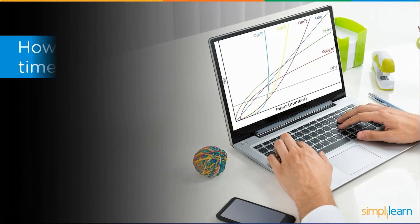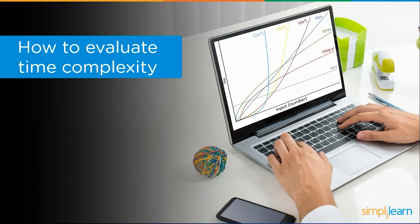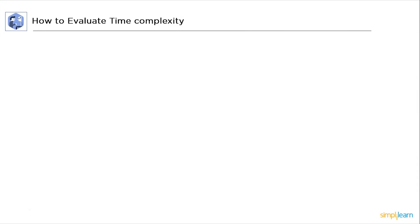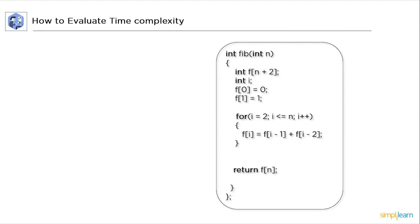Now that you have a firm grasp of time complexity and its types, we will discuss essential steps to evaluate the time complexity. To understand this, we will take an example of Fibonacci numbers. This code prints the Fibonacci numbers till n. We will divide this code into three parts, isolating all the loops that play a significant role in altering the time complexity.